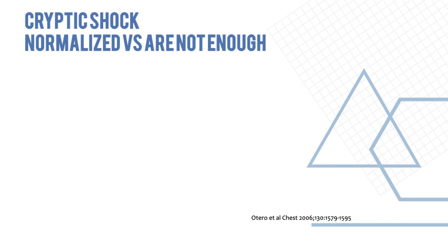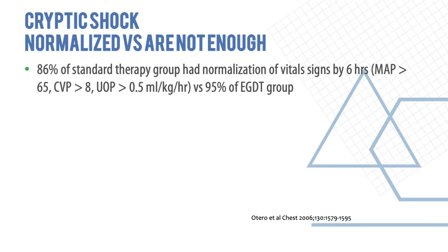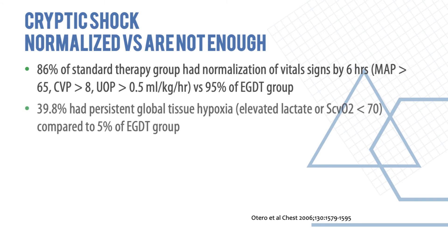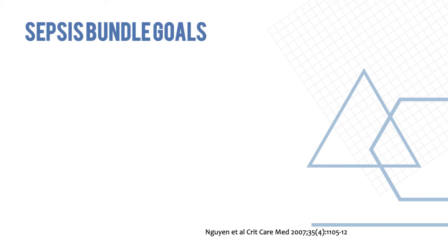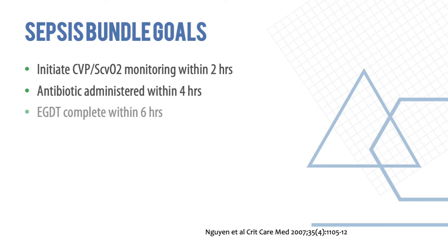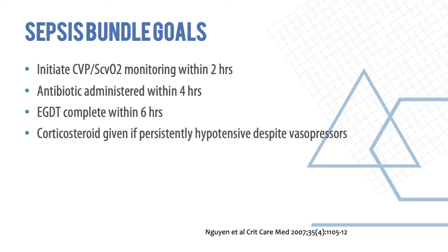Cryptic shock is also important to understand. In the standard therapy group, 86% had normalization of vital signs by six hours versus 95% in the early goal-directed therapy group. About 40% had persistent tissue hypoxia compared to only 5% in the early goal-directed therapy group. In-hospital mortality for cryptic shock was 56.5% versus only 30% in the early goal-directed therapy group. Sepsis bundle goals are critical: initiate central venous pressure monitoring within two hours, give antibiotics within four hours, complete early goal-directed therapy within six hours, administer corticosteroids if hypotension persists despite vasopressors, and monitor lactate for clearance.